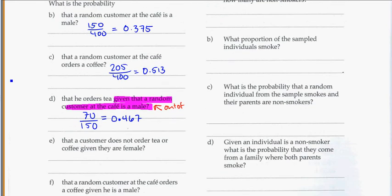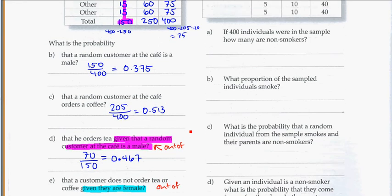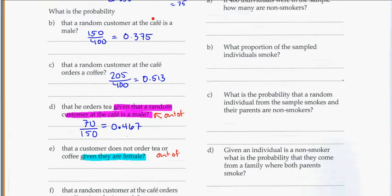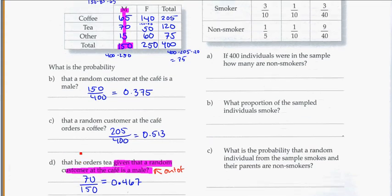Question E. What's the probability that a customer does not order tea or coffee, given that they are female? So here I've been given information that they're female. So that's my out of. And I know from my table that I've got 250 females. And I'm looking for the probability that they do not order tea or coffee. So they must be the other people, because they're not ordering coffee or tea. They're that other group.